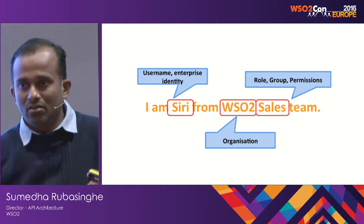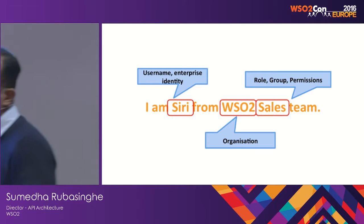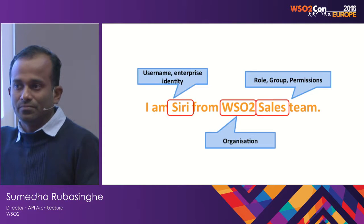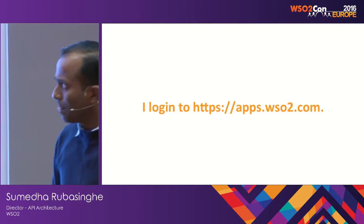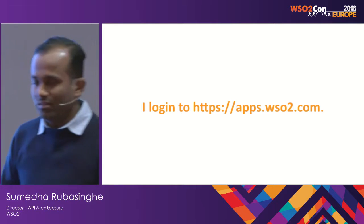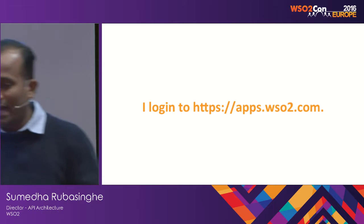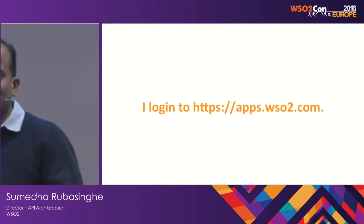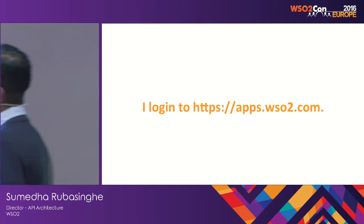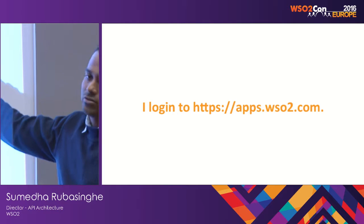Siobhan mentioned about the automatic provisioning that happens. When somebody joins, that provisioning happens and the statement becomes true. When Siri joins and wants to access the applications he or she is supposed to see, there's a deployed website — apps.wc.com — which is basically the App Manager's front store.